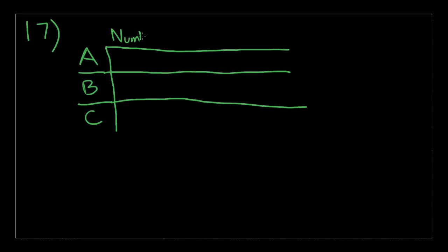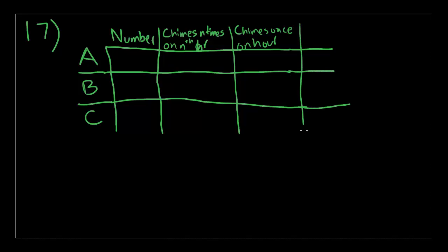Let's label the clocks themselves. There's clock A, there's clock B, and there's clock C. Let's extend these a little bit so we can sort of label them. Now we divide it to even more sections. So this is the number of clocks. And this one is chimes n times on nth hour. So basically, if it's 1 o'clock, then it'll chime one time. If it's 4 o'clock, it'll chime four times.